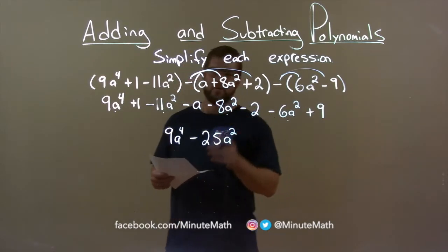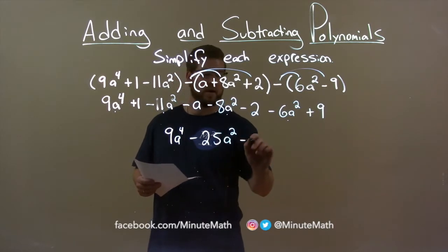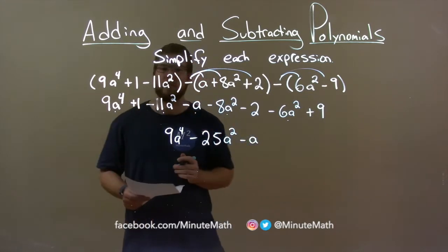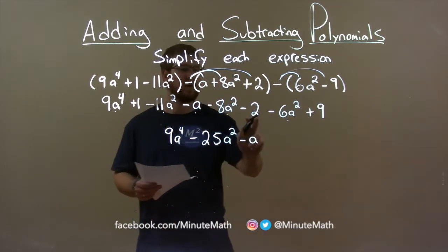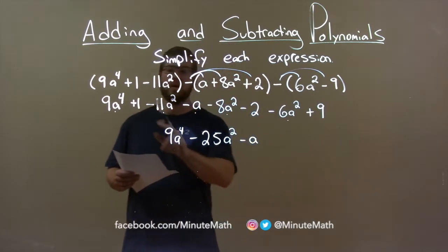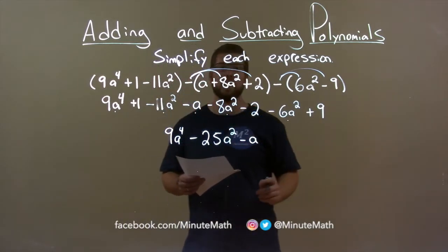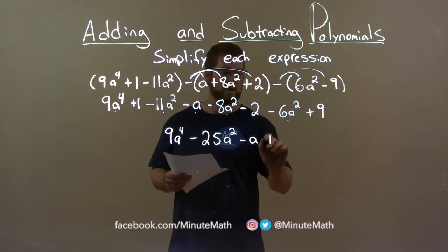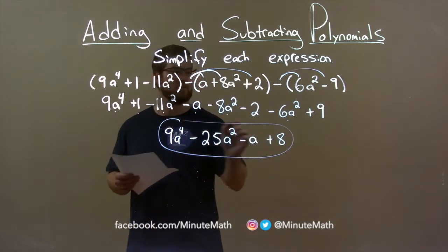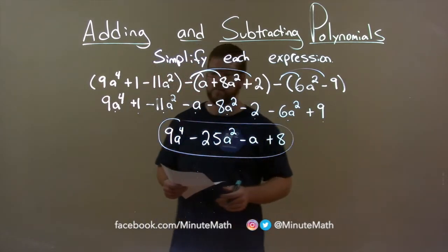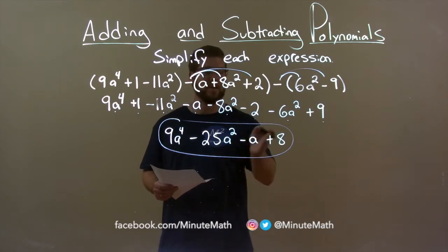The next highest degree — I almost forgot — I see just an a. It's by itself, so we have minus an a here. Now we just have our numbers: we have a 1 minus a 2 plus a 9. 1 minus 2 is a negative 1, and negative 1 plus 9 is a positive 8. We have a positive 8 here. Our final answer is 9a to the fourth minus 25a squared minus a plus 8.